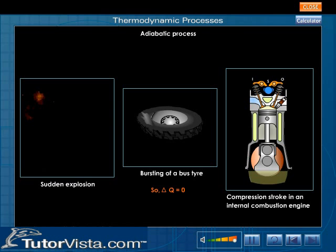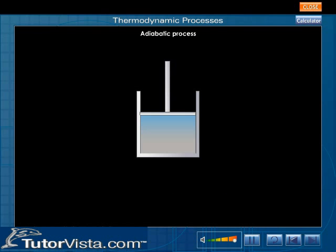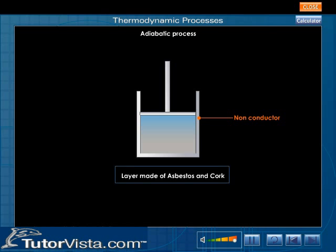So any process performed suddenly will be adiabatic. To prevent the heat flow, the system is perfectly insulated from the surroundings by using non-conductors of heat like asbestos and cork.